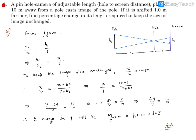Hello, question number one. A pinhole camera of adjustable length, that means the hole to screen distance, placed 10 meters away from a pole casts an image of the pole. If it is shifted one meter farther, find the percentage change in its length required to keep the size of image unchanged.